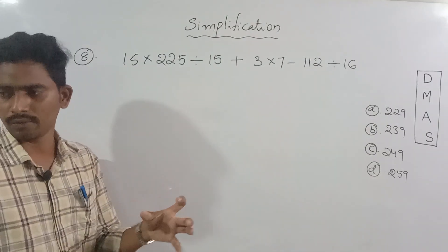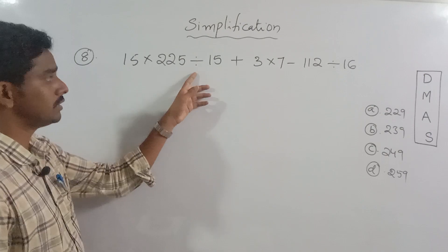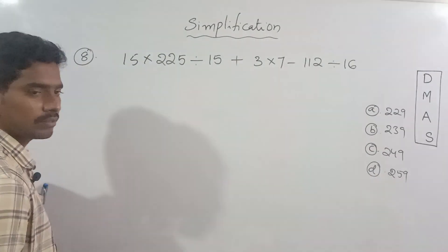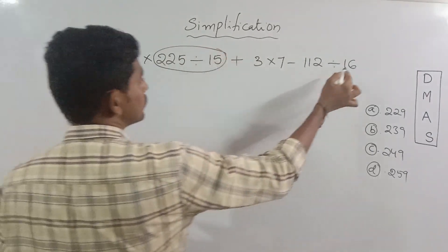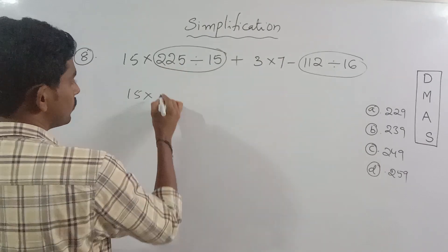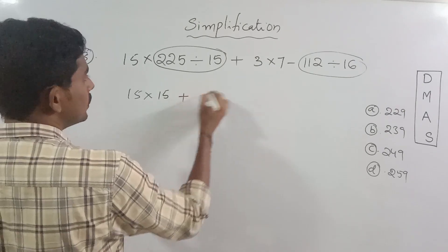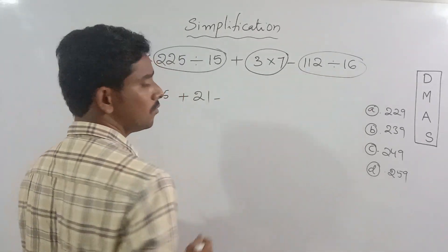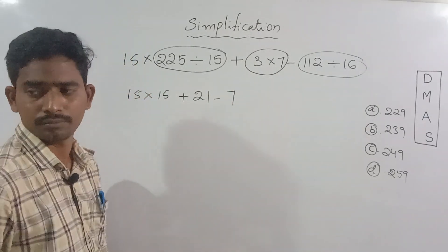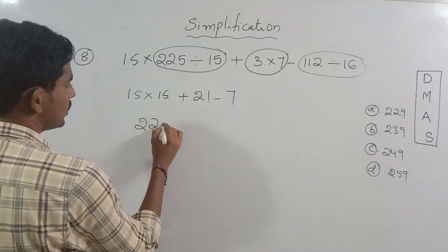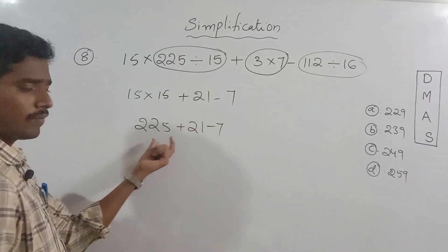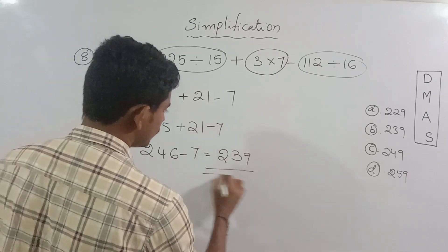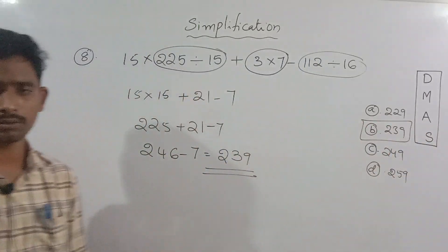Okay, 15 into 225 is divided by 15, plus 3 into 7, minus 112 divided by 16. So first we do division. 15 table is 225 — 15 times 15 is 225. Plus 21 minus 7. 225 plus 21 is 246, minus 7 is 239. So 239 is the correct answer.